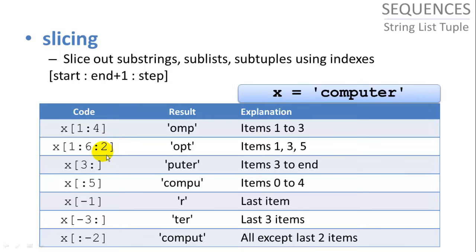So items one, three, and five, OPT. And x with items three to basically no end, right? We didn't put an item after the colon, so that's going to give us three onward, so P-U-T-E-R. If we don't put anything before the colon, then it starts at zero. So this will give us items one through four, or rather zero through four.